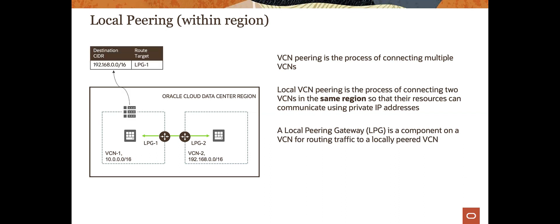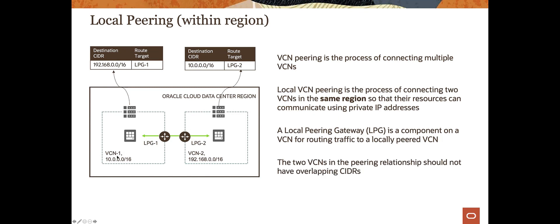For local peering route tables: VCN1 has traffic trying to reach 192.168.x.x — the route table routes that through local peering gateway 1. In reverse, VCN2 trying to reach 10.0.0.0/16 routes through local peering gateway 2, which automatically connects to local peering gateway 1. Overlapping CIDRs or IP addresses are a real problem here — make sure you create IP blocks that do not overlap.